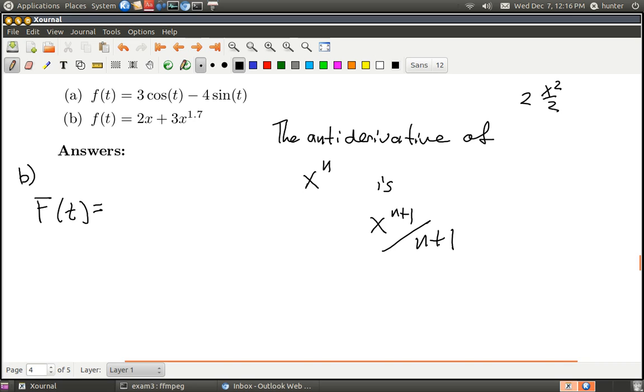I'm ignoring the constant 2 and following the rule. The exponent here is 1, it goes up to 2, and then I divide by 2 and the 2's cancel. Or we could just go straight to what we knew was the answer in the first place, which is x squared.